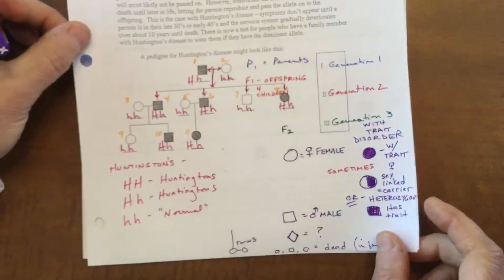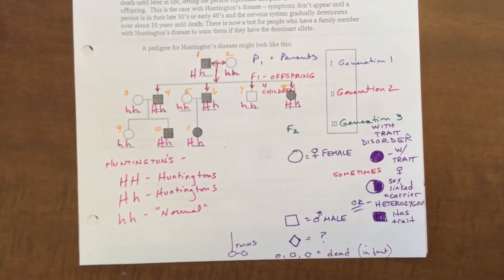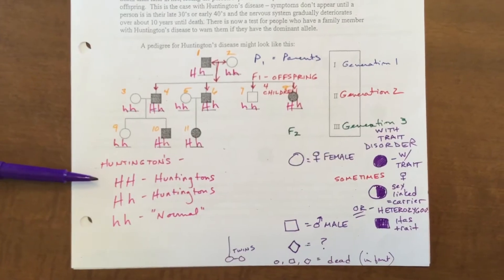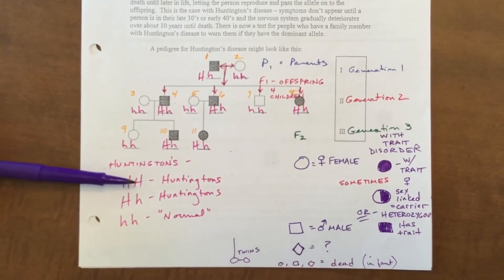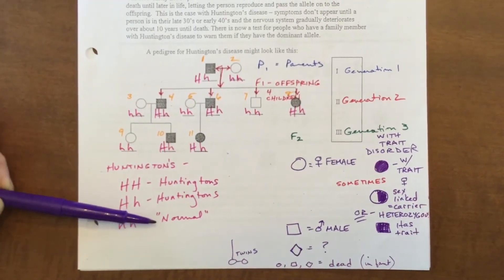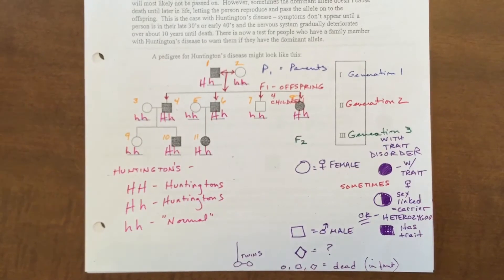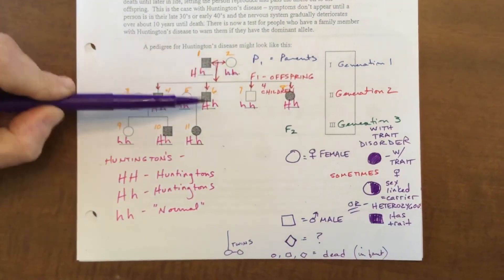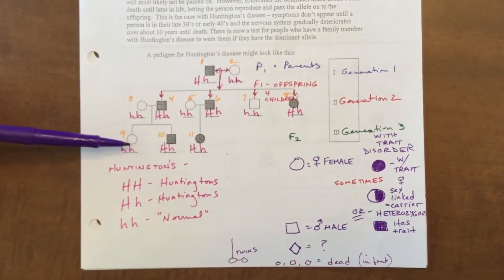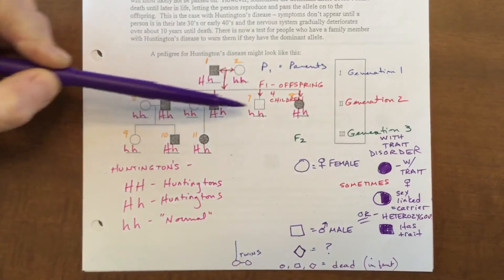This page goes through Huntington's disease, one of the disorders from the human karyotype packet. The first thing to find is the key. Huntington's is an autosomal dominant disorder: big H big H or big H little h means the person has Huntington's; little h little h is the normal recessive. All shaded individuals have Huntington's, and all unshaded individuals are little h little h — normal. Start by filling in all unshaded ones as little h little h.